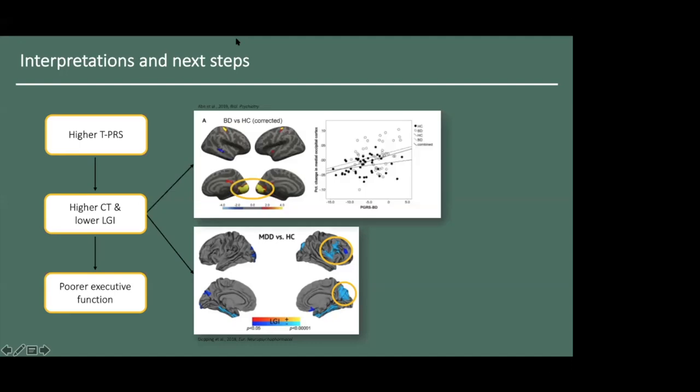On the flip side, our findings also complement those from a study in which bipolar patients and controls were imaged at two time points in their 40s. The authors of this study reported abnormal increases in thickness in the medial occipital cortex in the bipolar patients, and they noted a significant association between the magnitude of change in thickness and genetic risk for bipolar disorder, at least some of which is shared with depression.